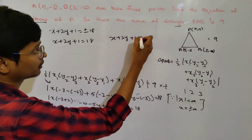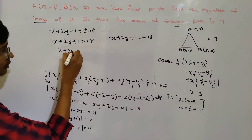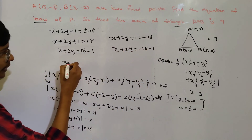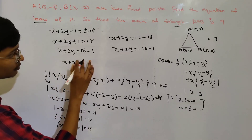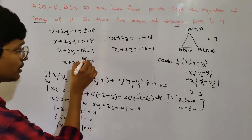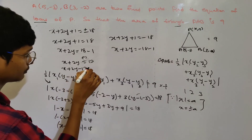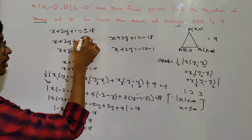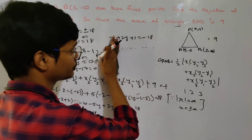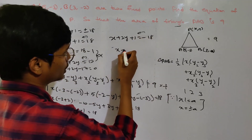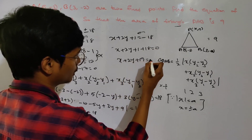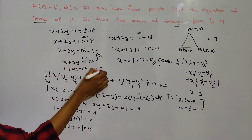So x + 2y + 1 = 18 gives x + 2y = 17, i.e., x + 2y - 17 = 0. And x + 2y + 1 = -18 gives x + 2y + 19 = 0. Therefore, the locus of P is: x + 2y - 17 = 0 or x + 2y + 19 = 0.